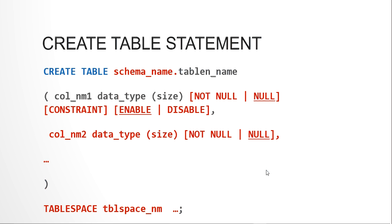You can also define constraints such as PRIMARY KEY or UNIQUE KEY. The ENABLE and DISABLE keywords let you enable or disable a constraint without dropping it. By default, Oracle takes constraints as enabled. After all columns are listed, you close the braces, followed by optional clauses like storage clauses, tablespace specification, LOGGING, and memory options.